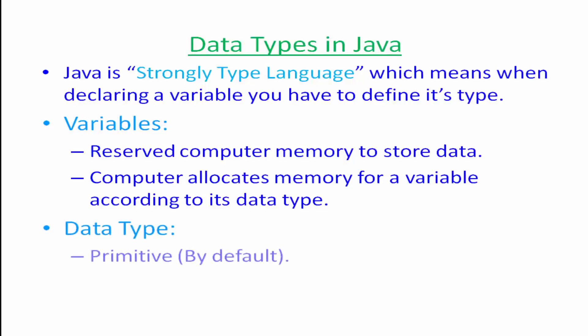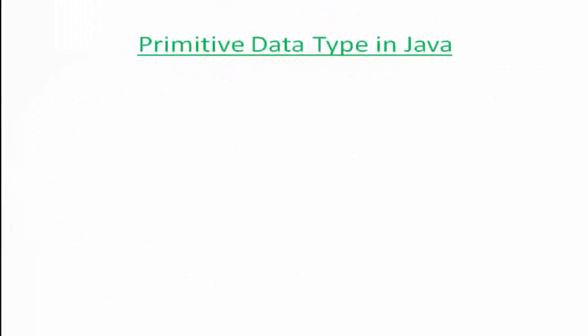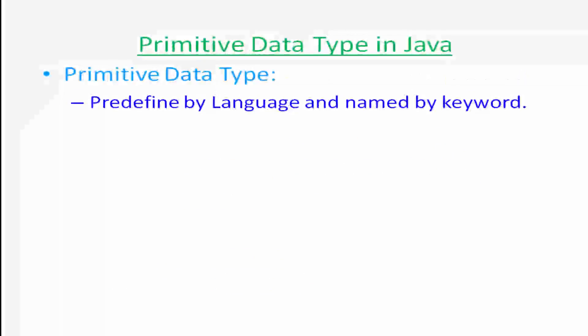We have two data types: primitive data types, which are default data types provided by Java, and non-primitive data types, which are data types defined by programmers. Let's look first at primitive data types. These are predefined by the language and named by a keyword.